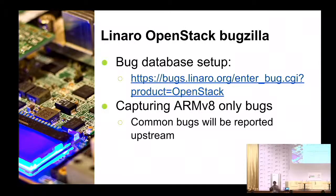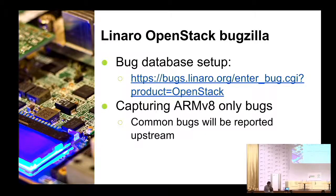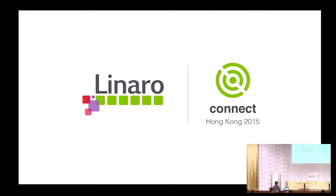We've started this Bugzilla component and are going to raise ARMv8 bugs we see there. Anything else which we believe is common, we're going to continue to use the upstream bugs which have already been reported or report as new. That's pretty much what I had for Tempest and Rally — any questions?